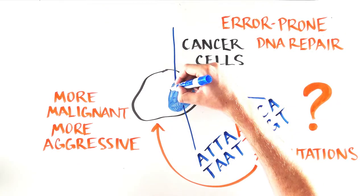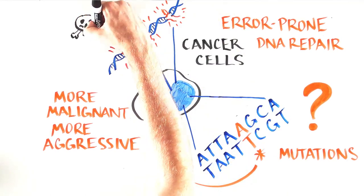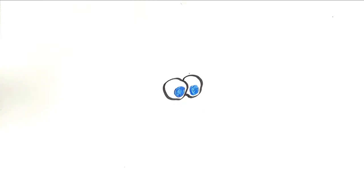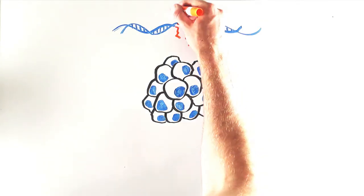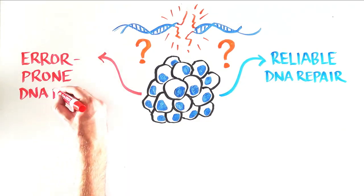However, DNA damage is a double-edged sword, and too much DNA damage can also kill cancer cells. So what if we could figure out if a cancerous tumor is using the reliable DNA repair pathway or the error-prone one?